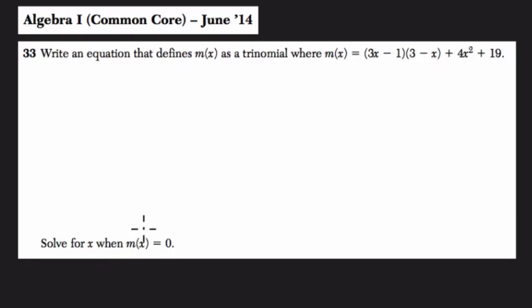Then they want us to solve for x when m(x) is 0. So they're basically saying simplify this and write it as a trinomial, and then solve for x when the expression is equal to 0.